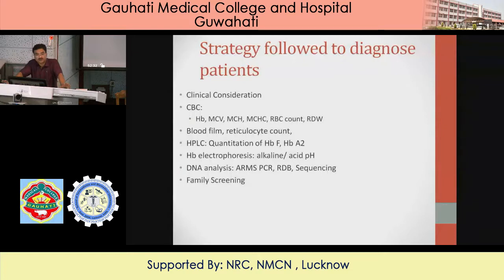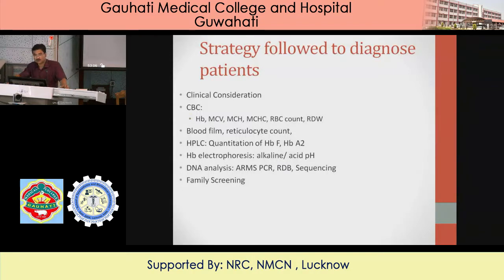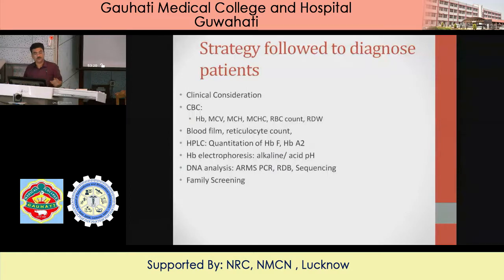The overall strategy for diagnosis: take clinical consideration, look at CBCs (every CBC has its own weightage), blood film, retic count, HPLC, hemoglobin electrophoresis in some cases, DNA analysis, and finally family screening. Each and everything constitutes the final outcome. Diagnosis cannot be done on chromatography alone — it should be a combination of clinics, peripheral smear, proper patient history, family screening, chromatography, and clinical presentation, all together giving you the right diagnosis.